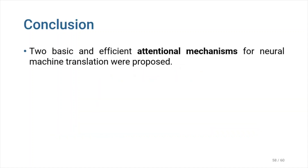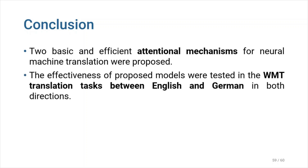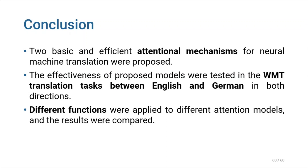Conclusion. In this paper, two basic and efficient attentional mechanisms for neural machine translation were proposed: the global approach, which always looks at all source positions, and the local one, that only attends to a subset of source positions at a time. The effectiveness of the proposed models was tested in WMT translation tasks between English and German in both directions. For the English to German translation direction, the ensemble model established new state-of-the-art results. This paper not only shows that attention-based NMT models are superior to non-attentional ones in many cases, but also sheds light on which score functions are best for which attentional models.